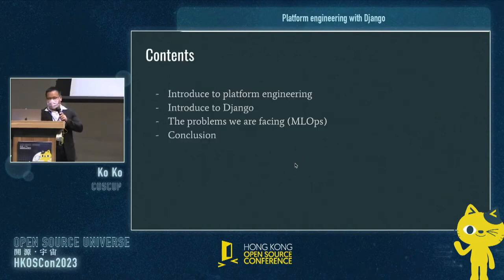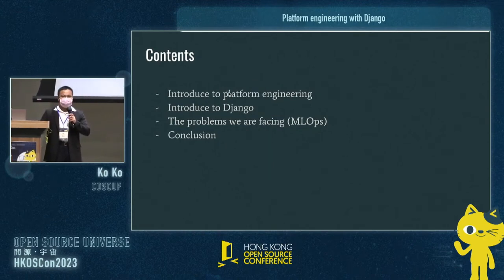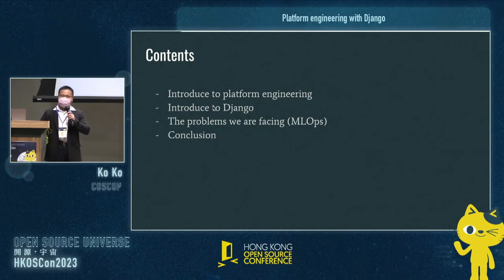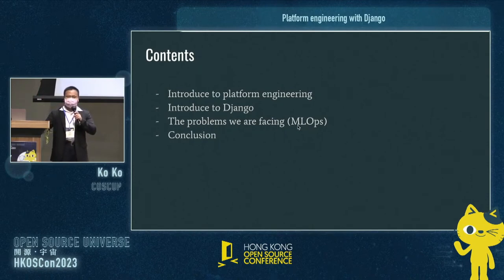Besides Microsoft MVP, I have certifications about Azure Cloud. For example, I have Azure Solution Architecture — an expert level certification — and I am a DevOps Engineer, also expert level. I also have certifications in Azure AI and Azure Data Scientist. This is our content for today: first, what is platform engineering and why we want to do it; second, an introduction to Django, a powerful open source Python web framework; third, the problems we face in ML apps; and finally, a simple conclusion.